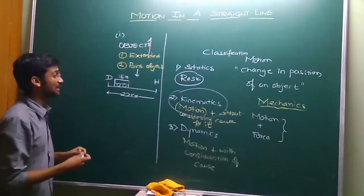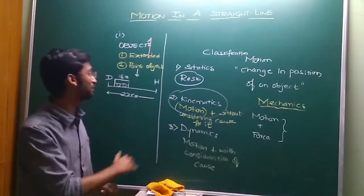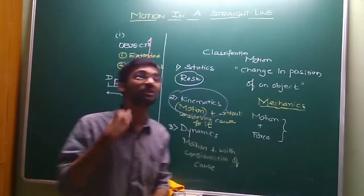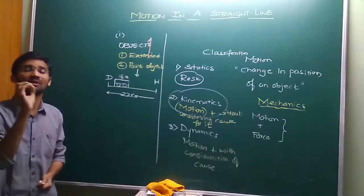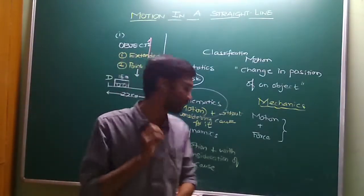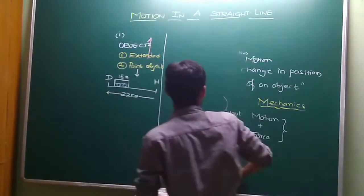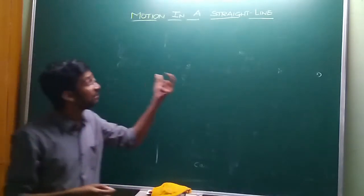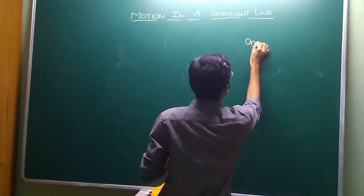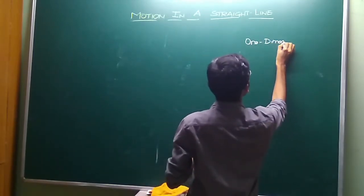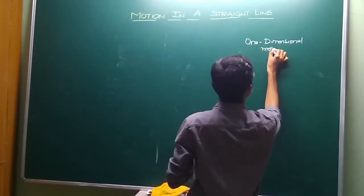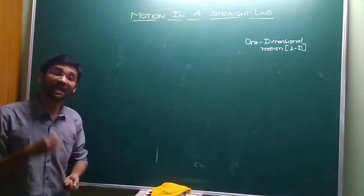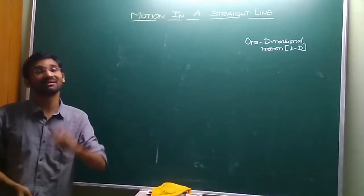That is one assumption we make. Now, for the second point: we are discussing motion in a straight line. We will use a coordinate system to visualize this. One-dimensional motion can be expressed using the x-axis, y-axis, or z-axis — any one of them.